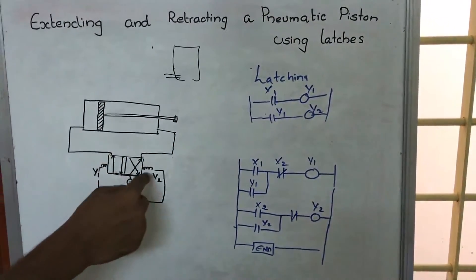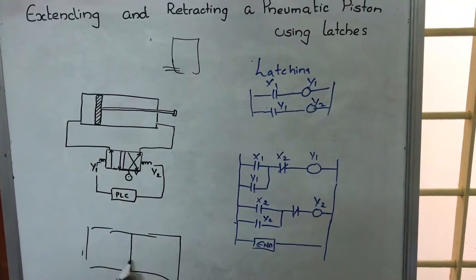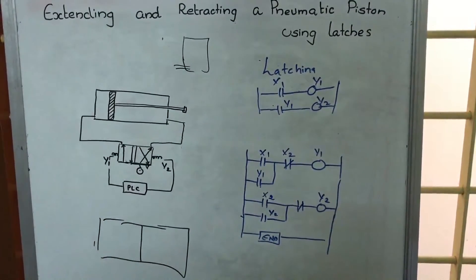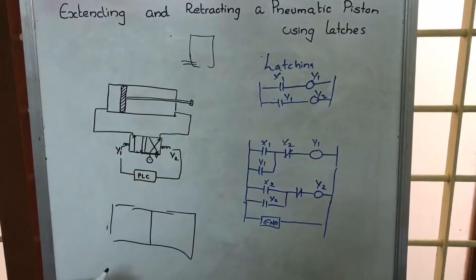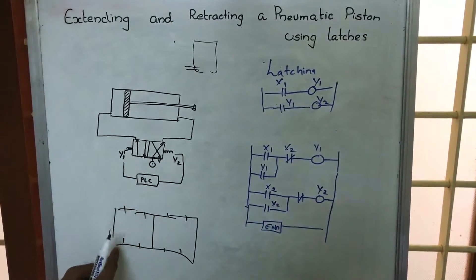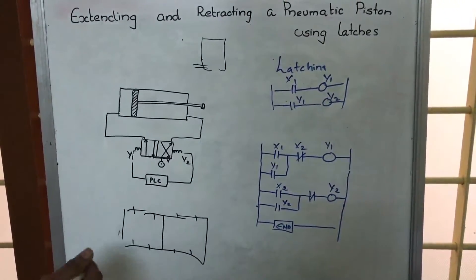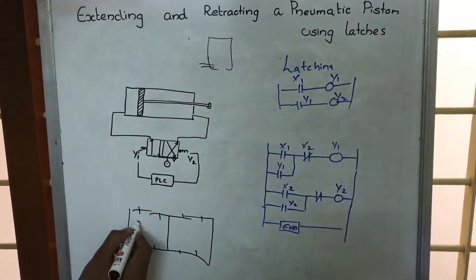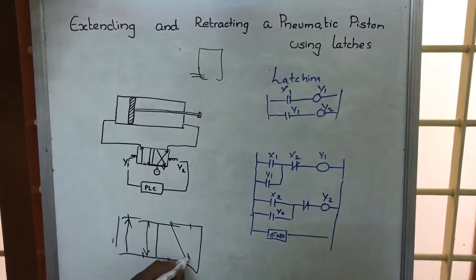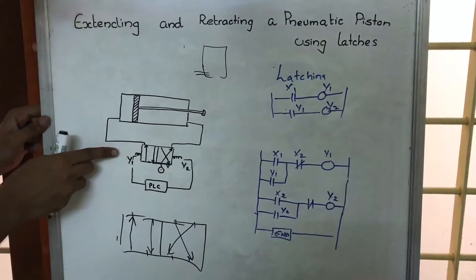We have a piston and a wall — this is a 4/2 valve (4 ports, 2 states). When enlarged, you can see two sections representing the two states. There are four ports: one, two, three, four. When one part is energized, two specific ports connect; when the other part is energized, the other two ports connect.